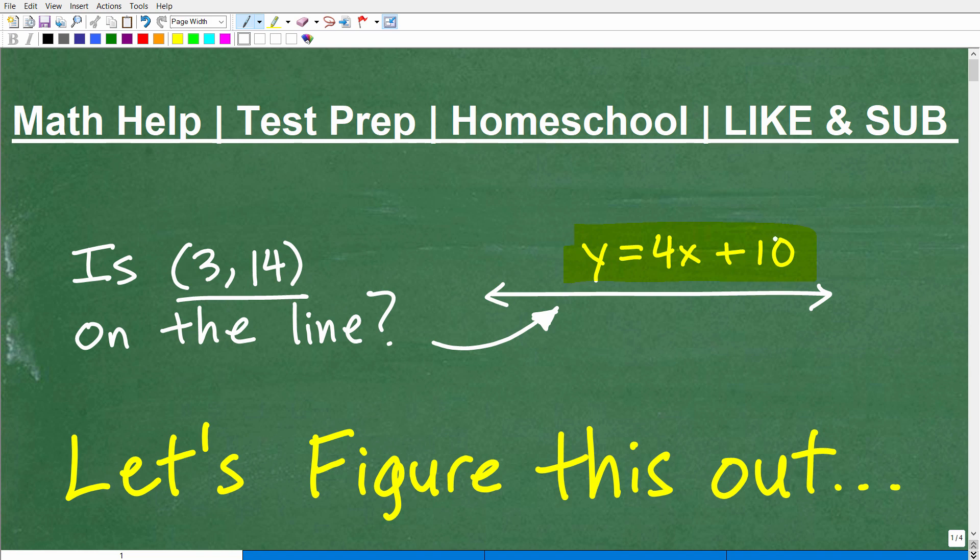So you could graph this line, okay? And here we have a point. And this point, of course, you could plot. And the question is, is this point here, (3, 14), on this line? How can we determine this?